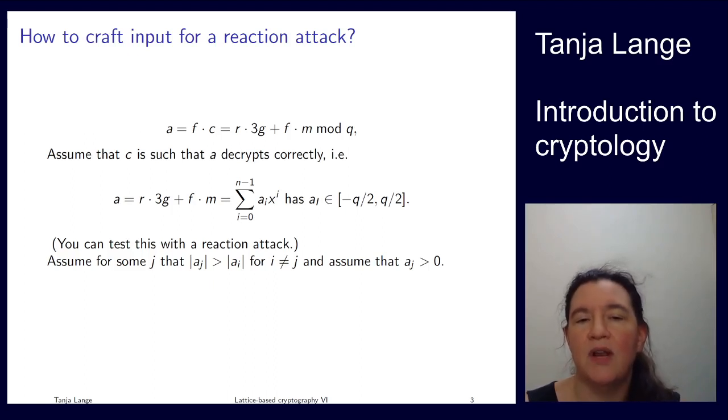So now our attempt is can we overflow this coefficient? Well, can we overflow a to begin with? And since a_j is the largest coefficient we'll have the best chance at overflowing a in a_j. And overflowing means the decryption will fail, so we'll see that our victim or Bob here is not getting the right answer. Reaction attacks assume you get a true or false answer: does it decrypt correctly, yes or no? You don't get the decryption.